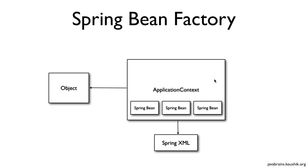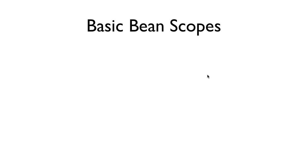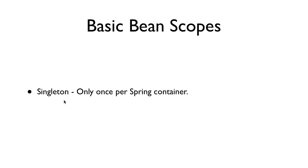This leads to the concept of scopes. There are two basic bean scopes in Spring. The first is called Singleton. The Singleton is analogous to the Singleton pattern in Java, but not fully the same. Basically, once you initialize an application context and give it a Spring XML, it initializes one bean per bean definition. No matter how many calls are made to getBean(), the Spring container returns only that one instance — it does not create new instances every time.